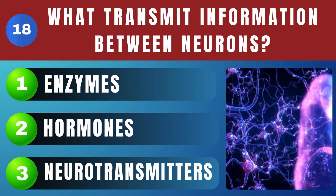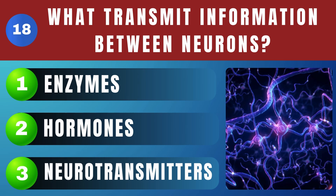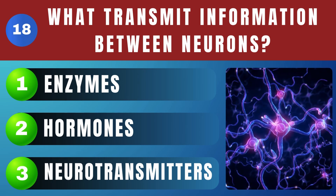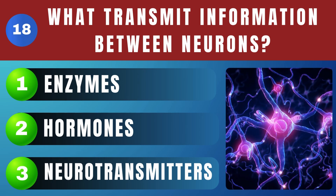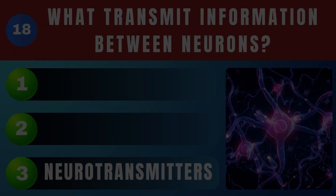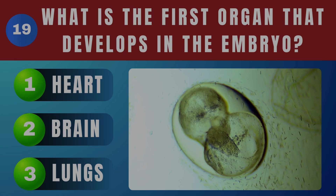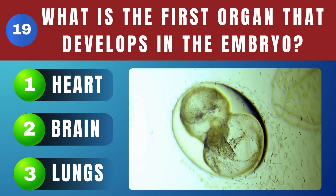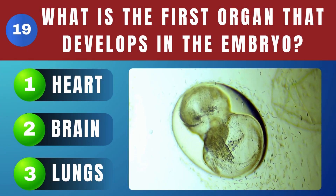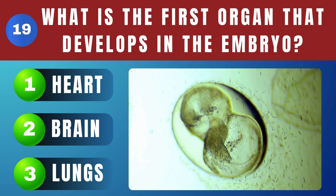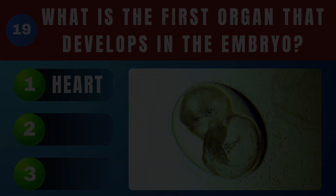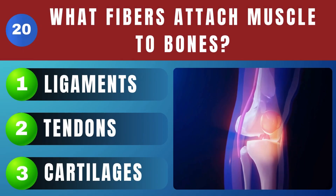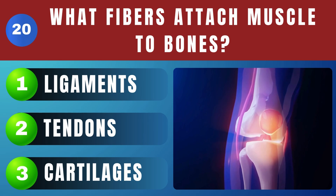What transmits information between neurons? Neurotransmitters. What is the first organ that develops in the embryo? Heart. What are the fibers that attach muscles to bones called? Tendons.